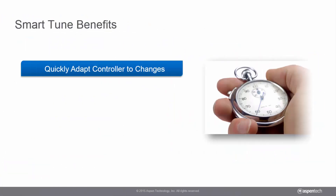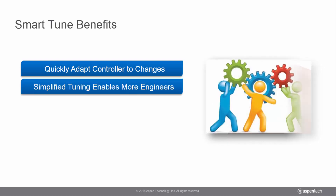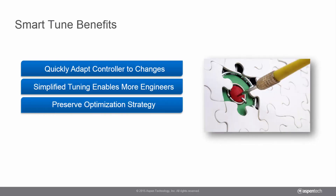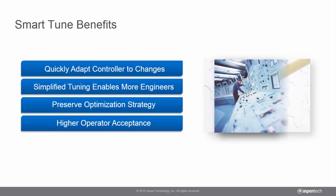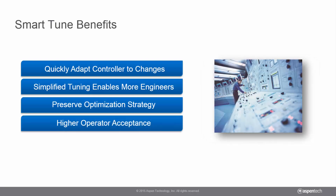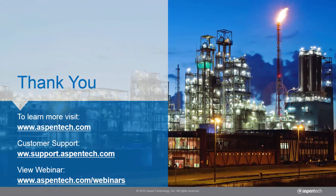With Aspen DMC3 SmartTune, you can quickly adapt a controller to changing economic conditions, enable more engineers to build and maintain controllers, preserve the optimization strategy as models degrade or are updated, and provide operators and engineers with greater insight into controller strategy with a new web-based view. For more information, please visit our website, www.aspentech.com.